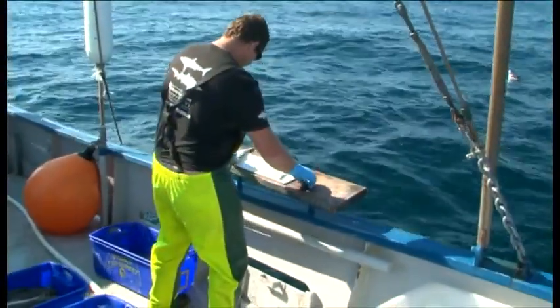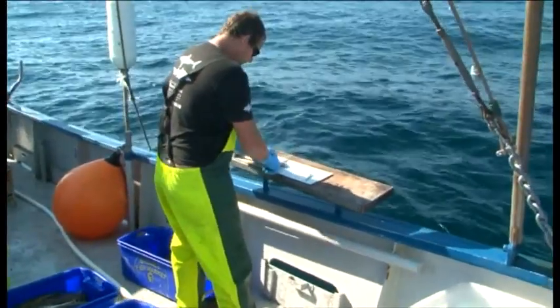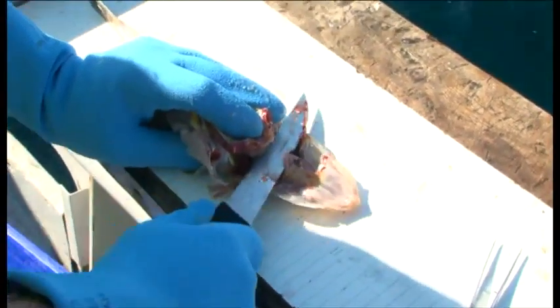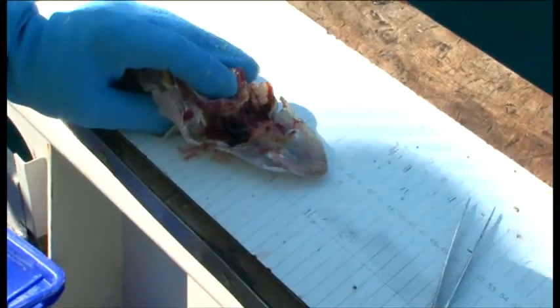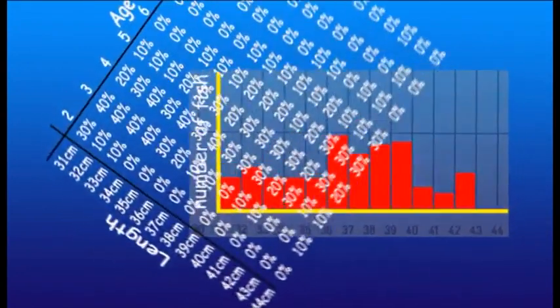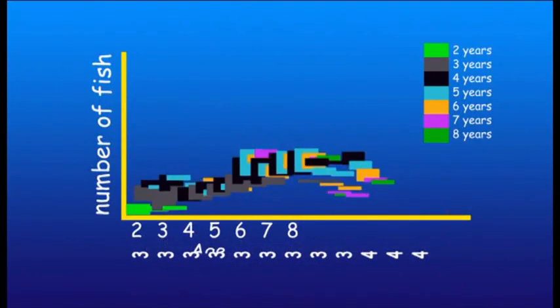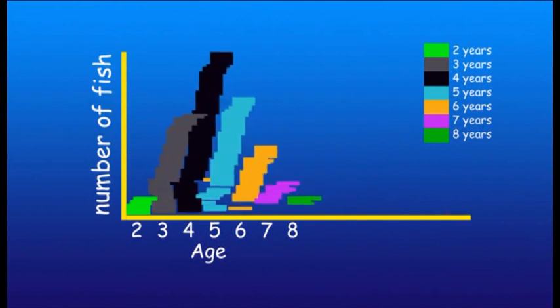Knowing how long a fish species lives and their mortality rate is critically important to managing a fishery. We've already discussed measuring fish age, so how do we measure mortality? Building on what we already know about the age frequency distribution in tiger flathead, and extending this over a number of years, we can track the change in population for each group of recruits.